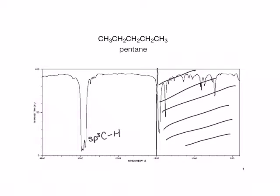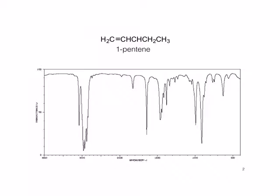Next, we'll look at the spectrum for pentene, which has a double bond, and you can see the difference. Now in addition to our SP3 carbon-hydrogen stretching, we now see SP2 carbon-hydrogen stretches. We also see a carbon-carbon double bond stretch at about 1640. The stretch at about 1800 is probably just an impurity and is not due to one pentene.